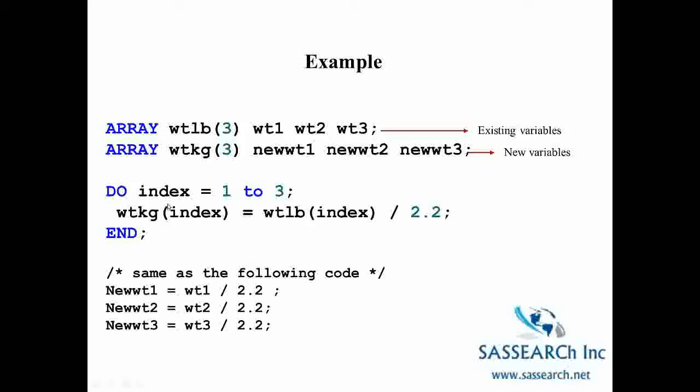Our do loop will loop three times, once for each of the weight variables. The word following the do creates a variable called index that takes on the values one, two, and three, incrementing by one each time the loop executes. The loop ends after the third iteration.